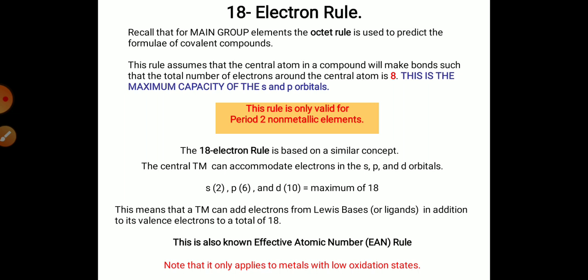This means that the transition metal can add electrons from Lewis bases or ligands in addition to its valence electrons to a total of 18 electrons. This is also known as the Effective Atomic Number rule, and it only applies to low oxidation state complexes.